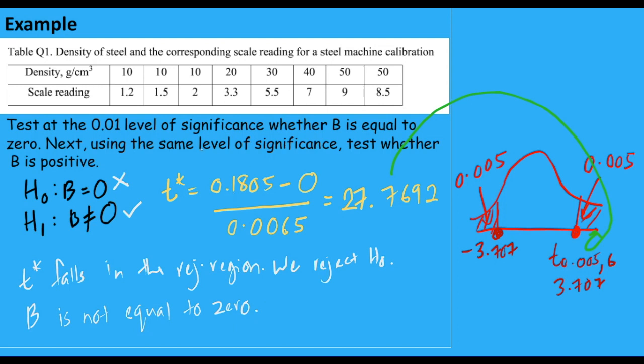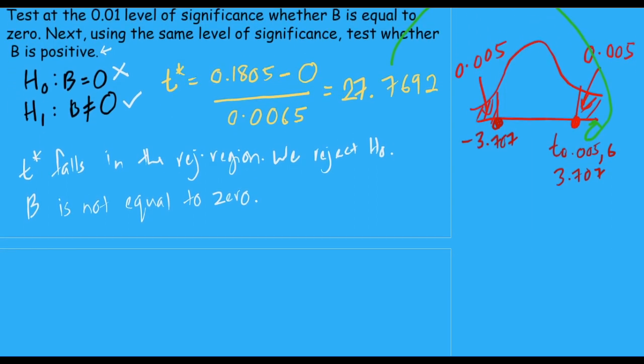Okay. We are going to solve the second problem. Next, using the same level of significance. That means alpha is 0.01. That's where the B is positive. Class, before we solve this question, you need to think about the meaning of positive. What is a positive value? Does it start from 0? Or is positive greater than 0? And you could google that. So positive values are all values that are greater than 0. That means when we are testing for B is positive, we are going to test whether B is greater than 0.